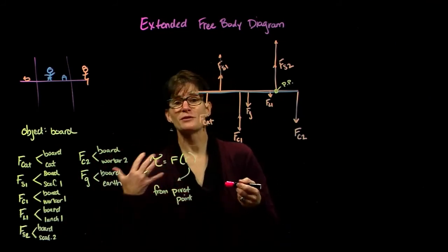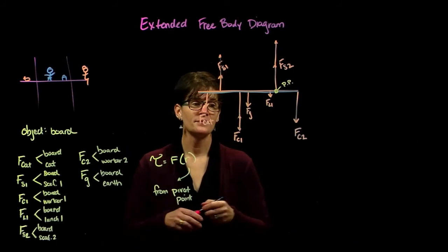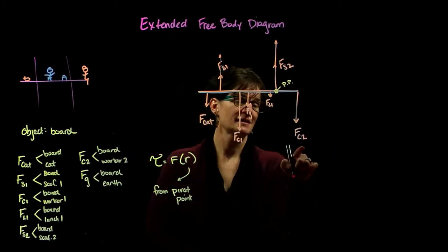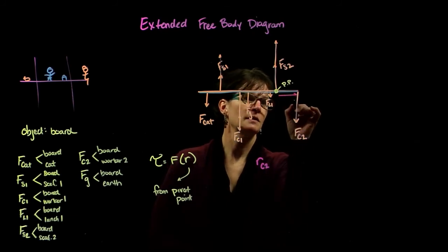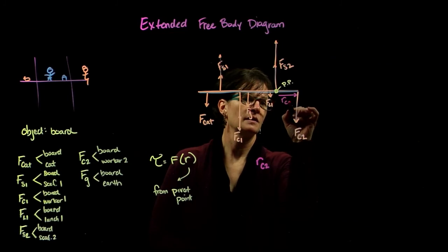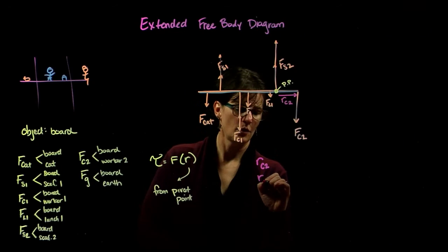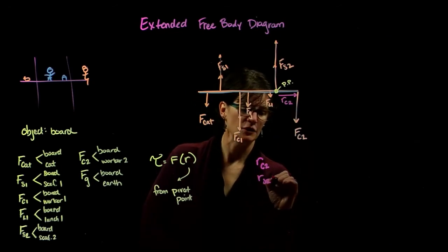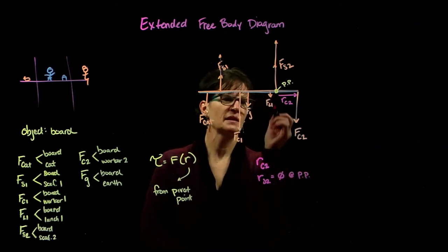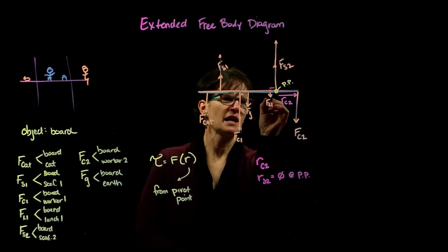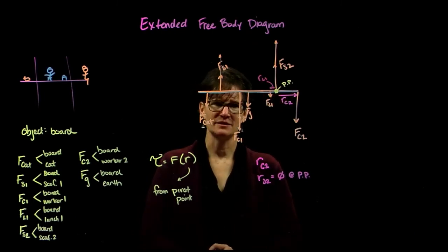So it's the radii from the pivot point to the force. So the radius for construction worker number two is represented by that value. The radius for scaffolding number two, well that's zero because it's at the pivot point. The radius for the lunch is represented by that arrow.